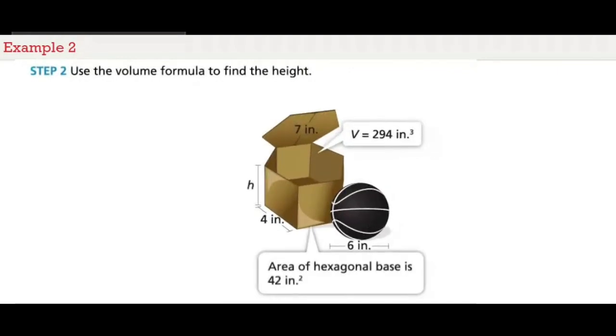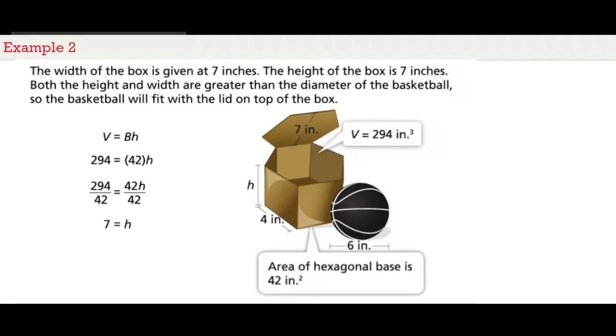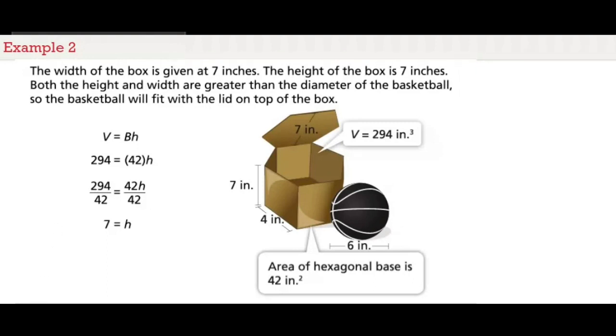Step 2 is to use the volume formula to find the height. Volume is equal to base times the height. Volume is 294 cubic inches and the area of the base is 42 square inches. Then we will divide each side by 42 to find the height, and we get 7. Since the width of the box is given at 7 inches, the height of the box is 7 inches. Both the height and the width are greater than the diameter of the basketball. So the basketball will fit with the lid on top of the box.